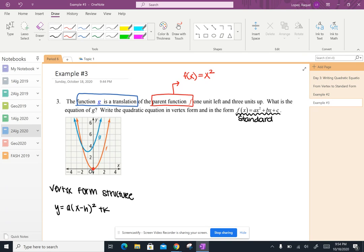And we can check from the graph too and our equation that the vertex of our parent function is at (0, 0). And it's got a stretch of 1, so that a value is going to be 1.